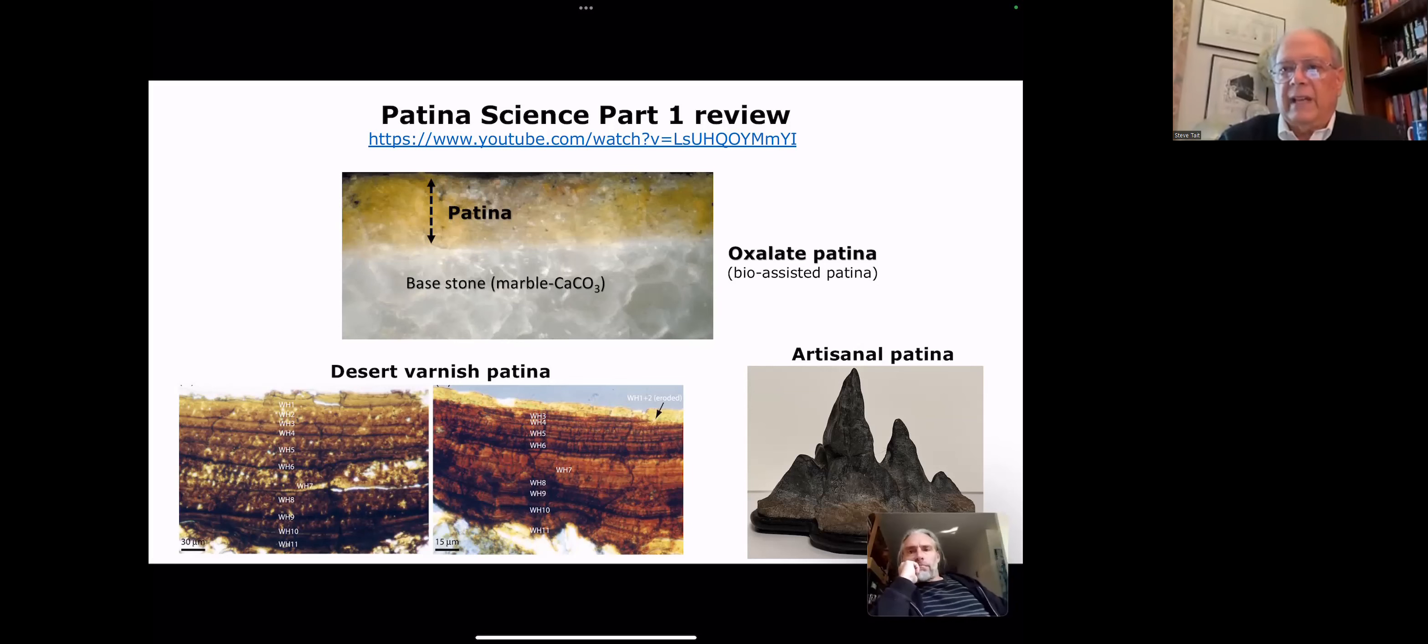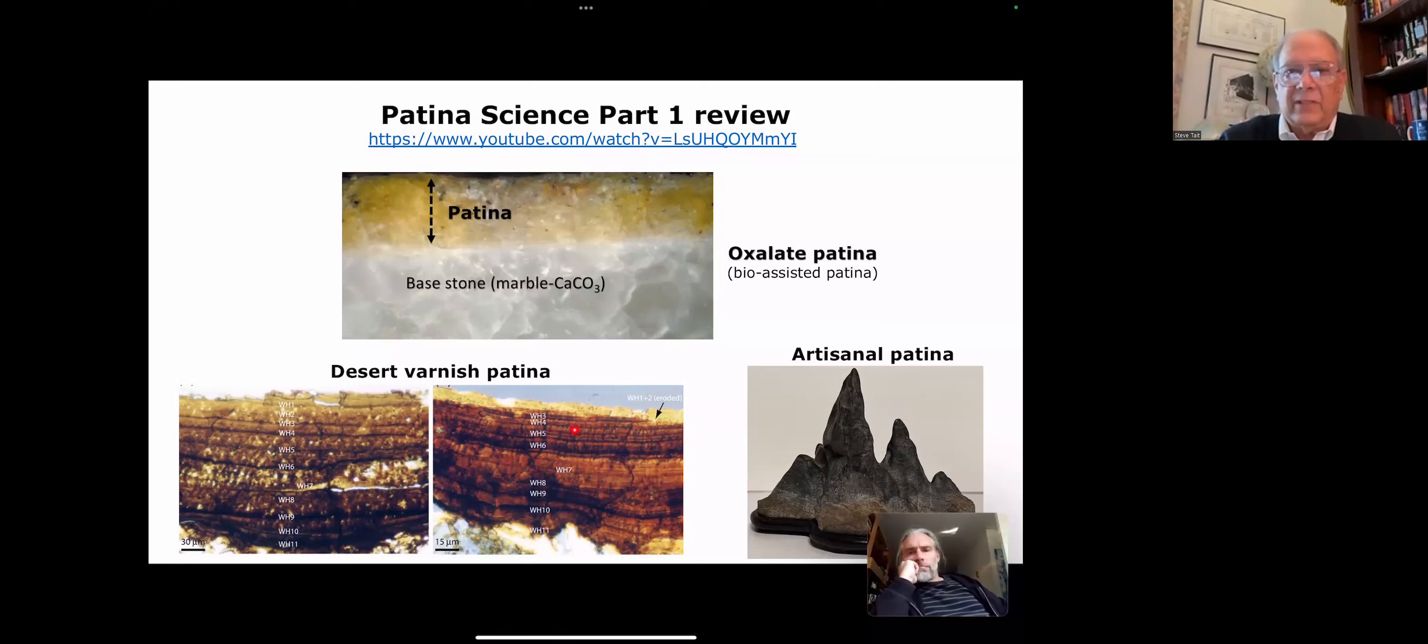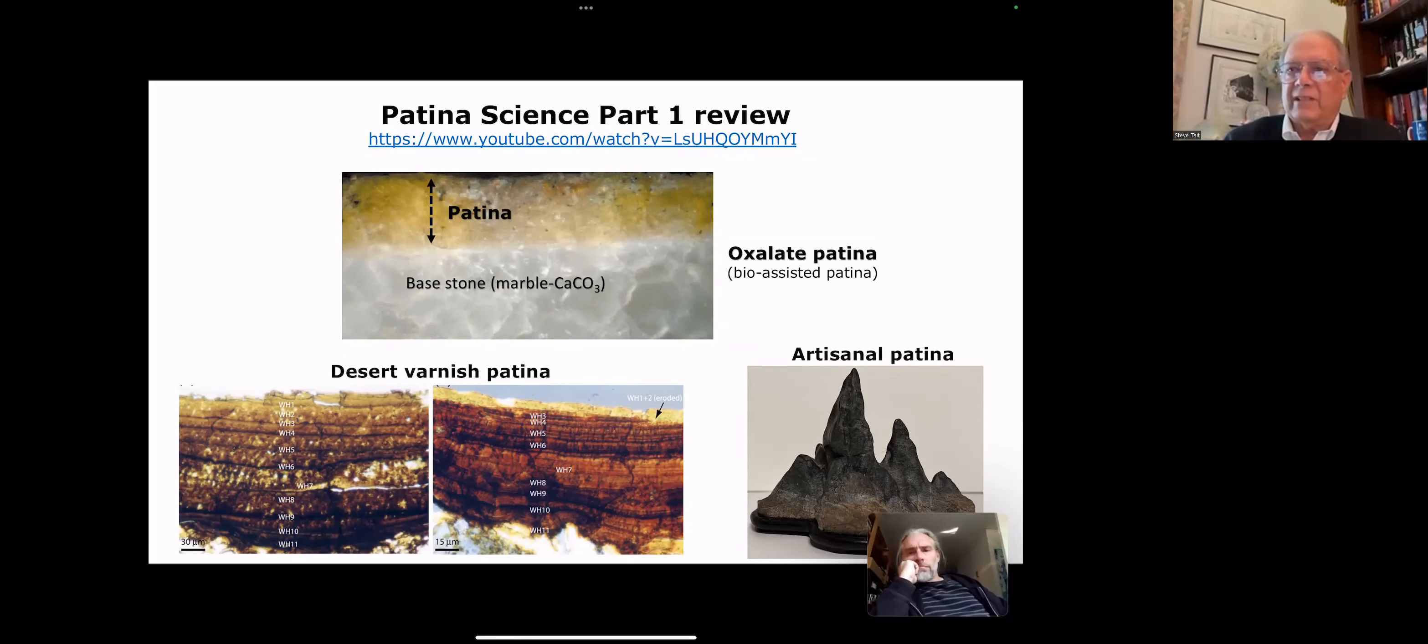There's also what's referred to as a desert varnish patina. This is a sedimentary or a depository, many layers, each deposited at different wet, dry seasons. It kind of looks like tree rings or a miniature Grand Canyon. These two are on the order of 20,000 years old, the best guess.